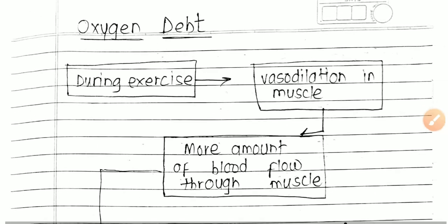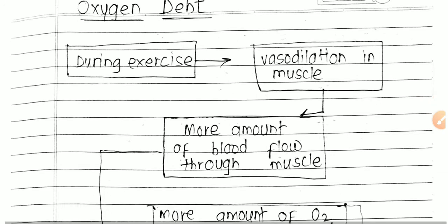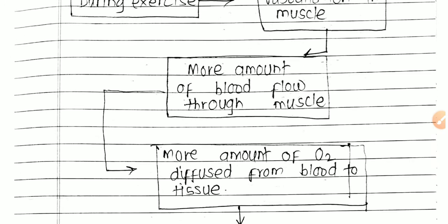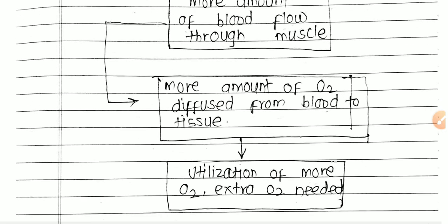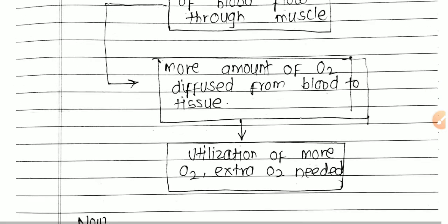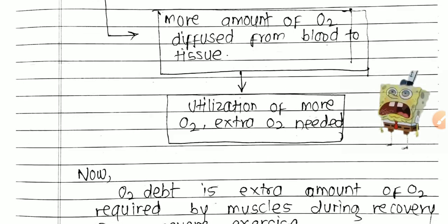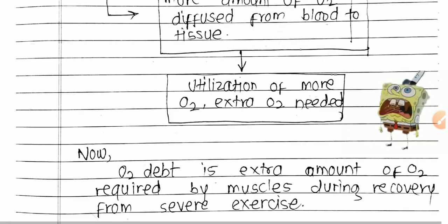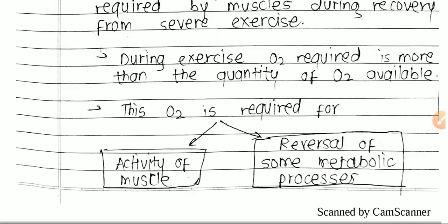During exercise, there is vasodilation in your muscles, so more blood flows through your muscles. This causes more oxygen to diffuse from blood to tissue, which also causes utilization of more oxygen, and extra oxygen is needed.